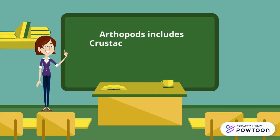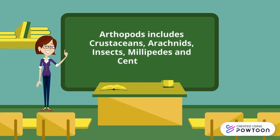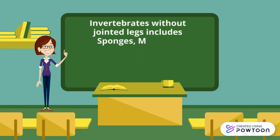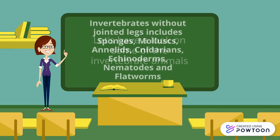Arthropods include crustaceans, arachnids, and insects, millipedes, and centipedes. Invertebrates without jointed legs include sponges, molluscs, annelids, cnidarians, echinoderms, nematodes, and flatworms.